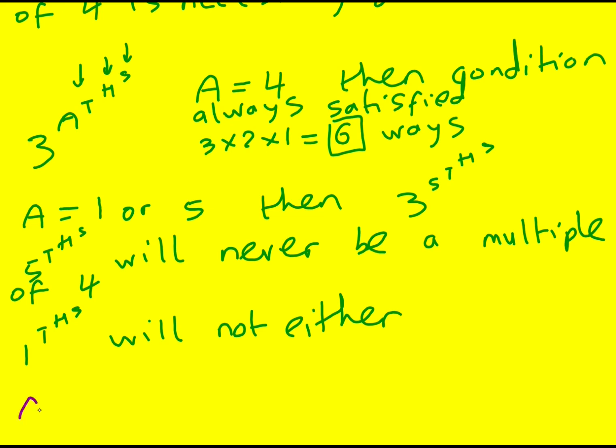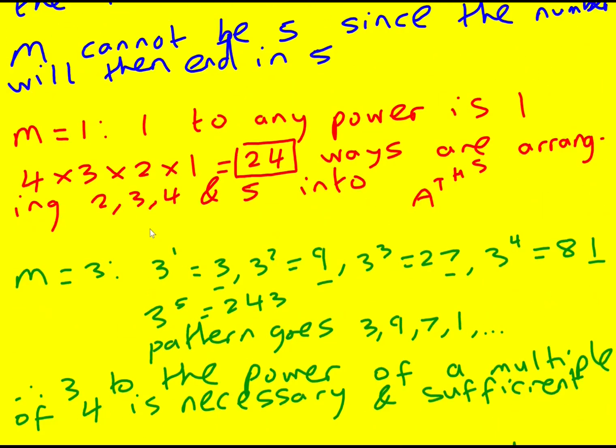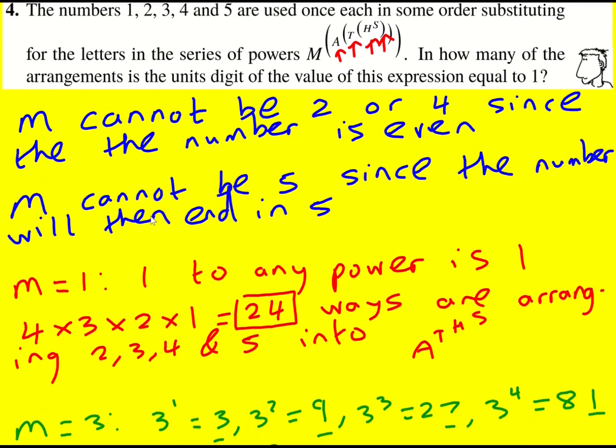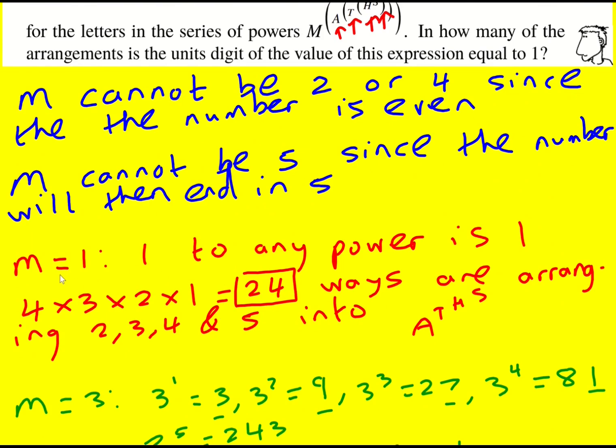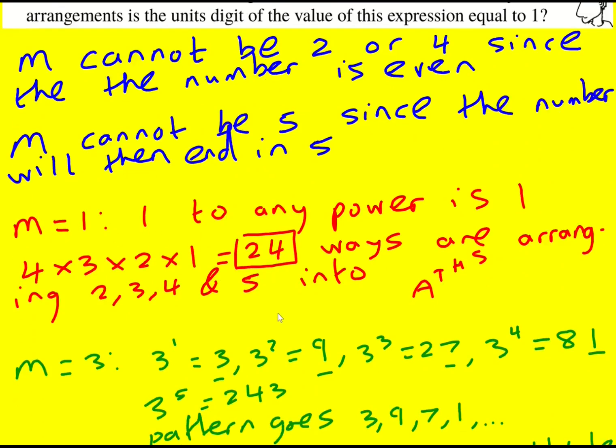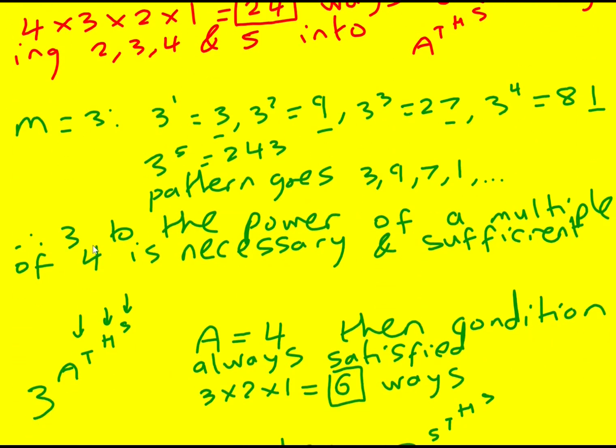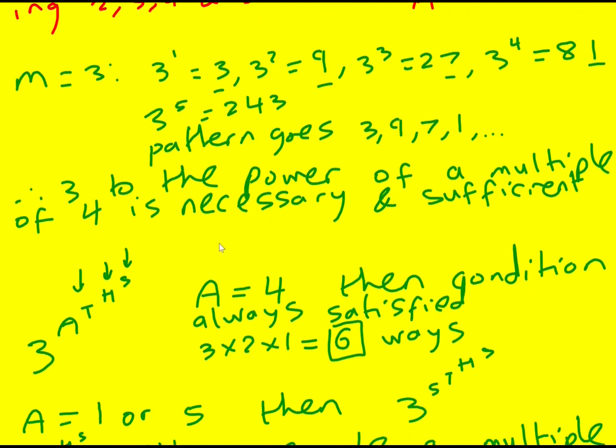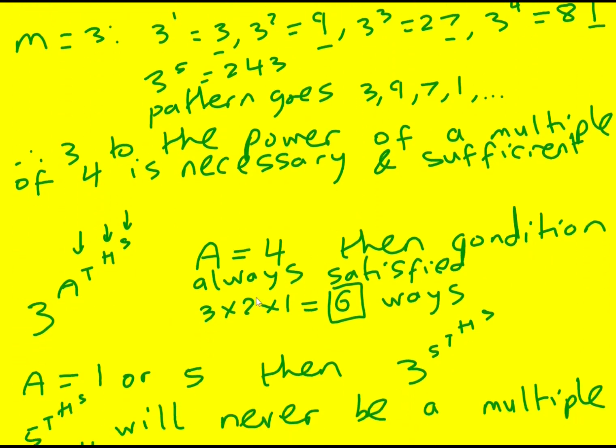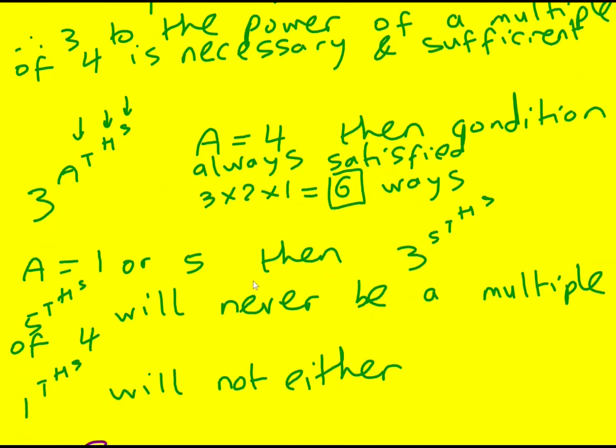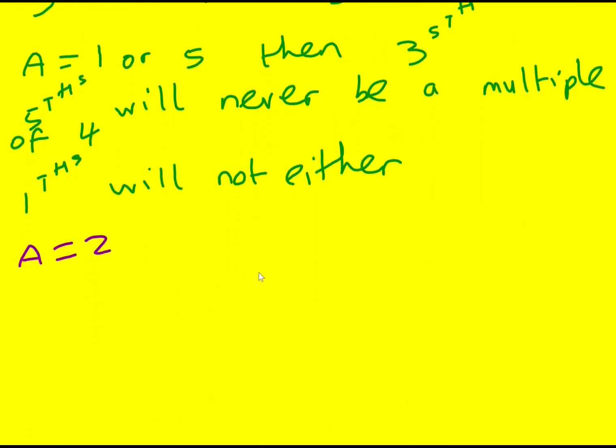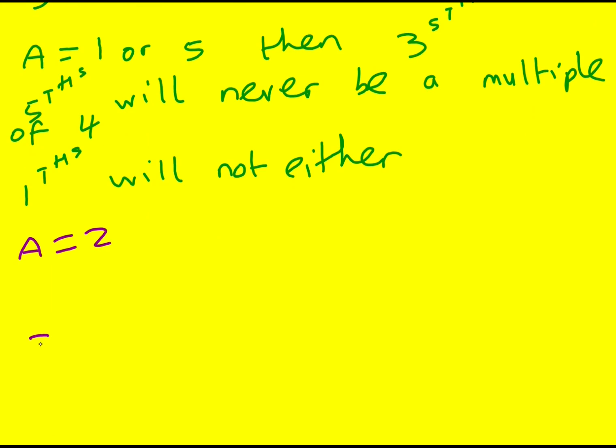So this leaves us with A equals 2. And hopefully you can see I've systematically worked through this. We've looked at all the different values of M, rejected most of them, looked at the case when M is 1, which gave us 24 solutions. Then M is 3, looked at that case by case. So A equaling 4 gave another 6 ways. A equaling 1 or 5 gave no other ways. We're left with A equals 2. So we've got 3 to the power of 2 to the T to the H to the S.